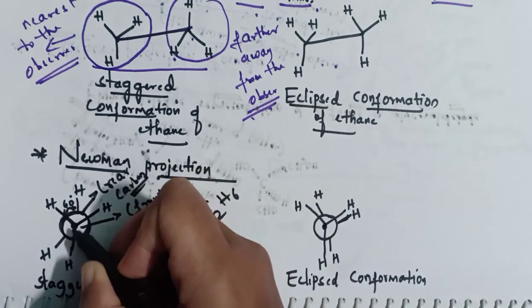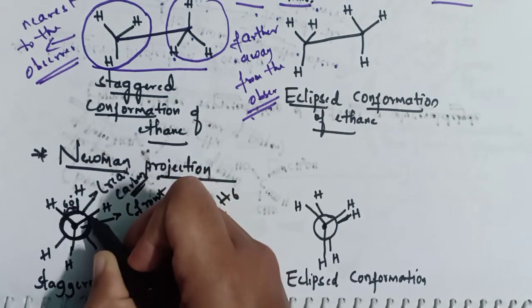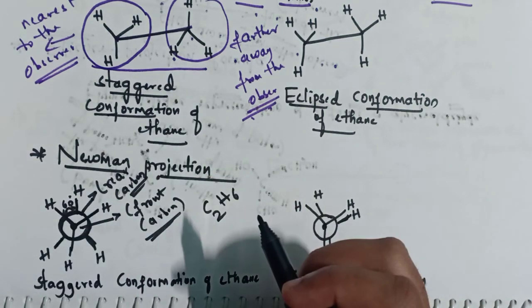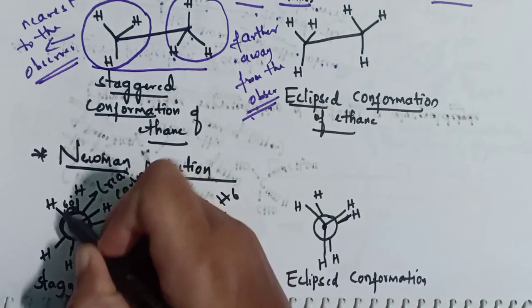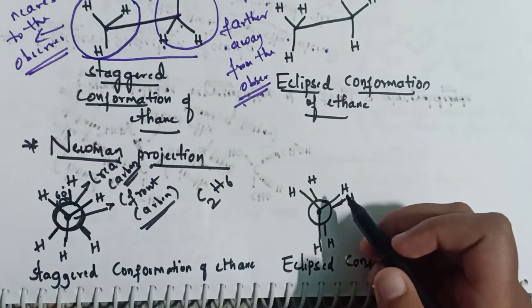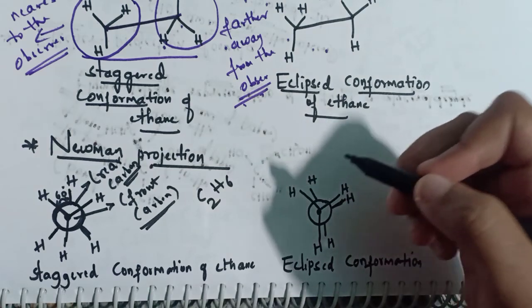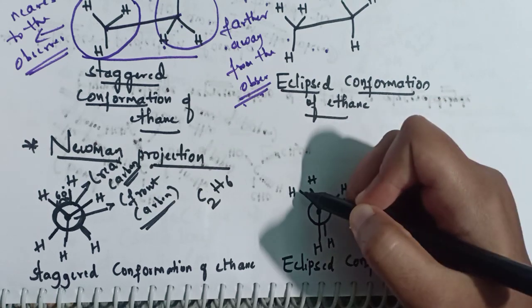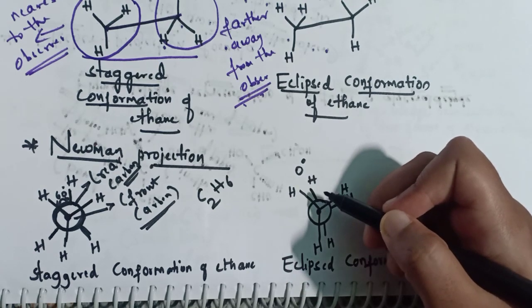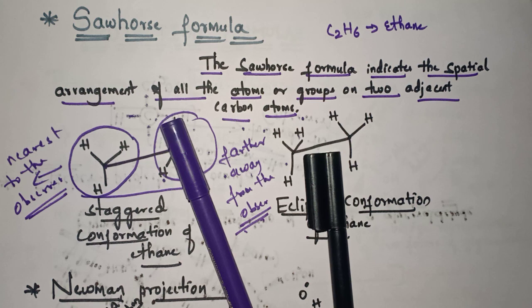For the dot (front carbon), you can see the groups attached to it. For the circle (rear carbon), you can see those groups as well. In the staggered conformation of ethane, the angle between the two hydrogen atoms is 60 degrees. In the eclipsed conformation, the hydrogen atom on the rear carbon is directly behind the hydrogen on the front carbon, so the angle between them is 0 degrees. This covers the four types of projection formulas. Thank you for watching.